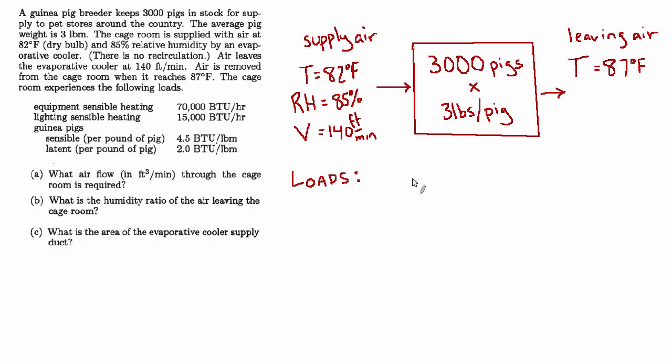I'll break it into two columns, sensible and latent. And I'll just say all the units are BTUs per hour, so we don't have to write the units over and over again. So we have this sensible load from equipment, that's 70,000. And then we have another 15,000 sensible from lighting. And then from the pigs themselves, we have 4.5 BTU per pound, and there's 9,000 pounds of pig, right? 3,000 pigs at 3 pounds per pig. So 9,000 times 4.5 is 40,500 for the sensible component.